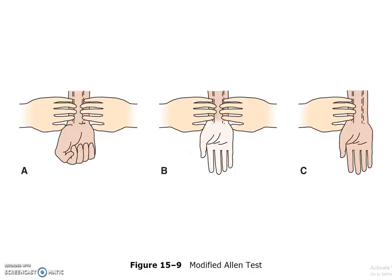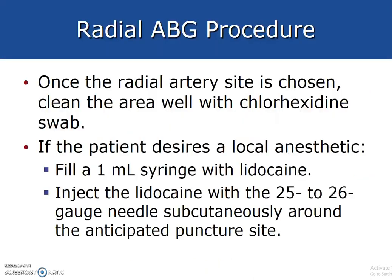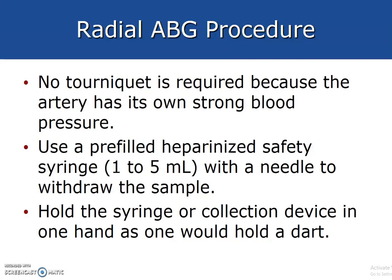We want the Allen test to be positive. When pressure is applied to both the ulnar and radial arteries, the hand should change color; upon releasing one side, circulation should return. Once the radial artery site is chosen, clean it with a chlorhexidine swab, then apply a local anesthetic. No tourniquet is required because the artery has its own strong blood pressure. Use a pre-filled heparinized safety syringe to collect the sample, held like a dart.